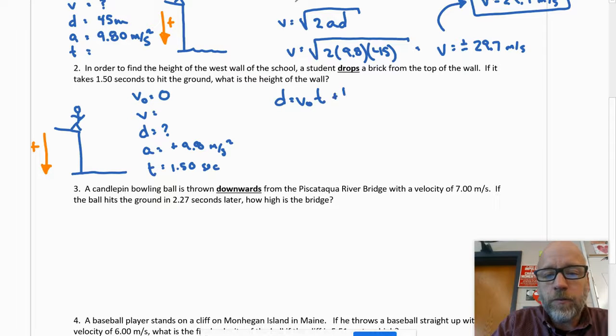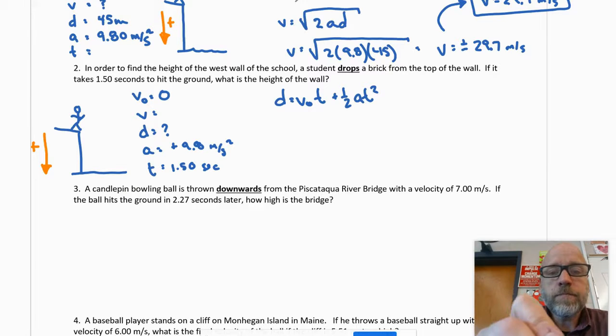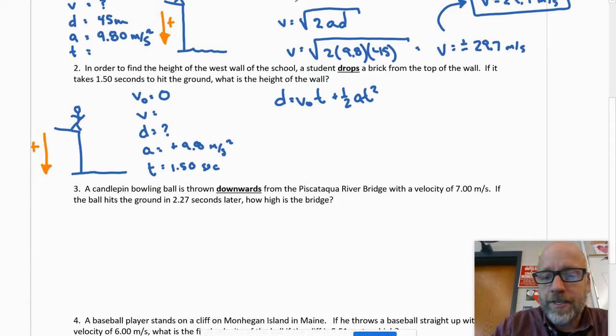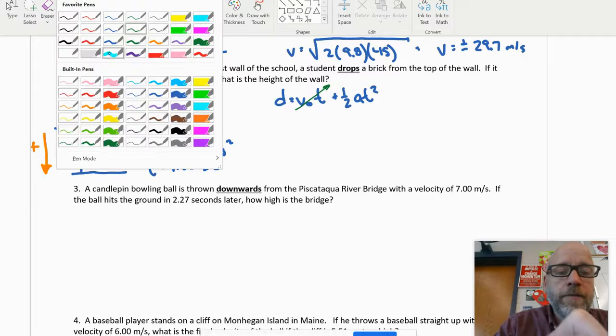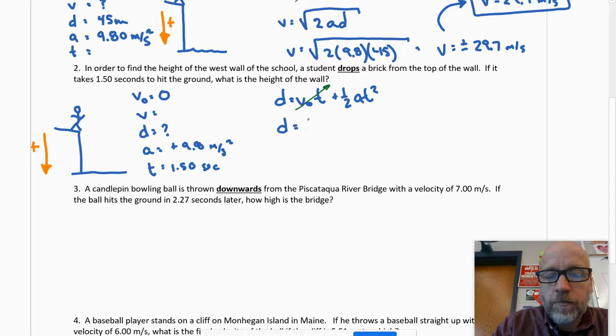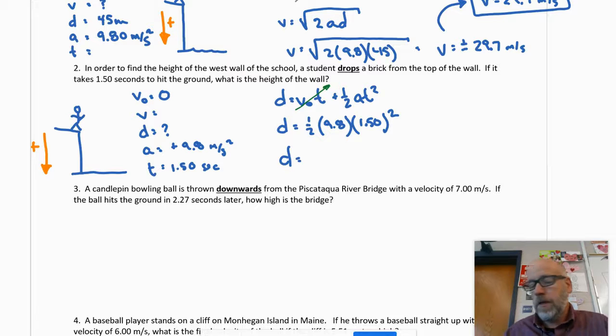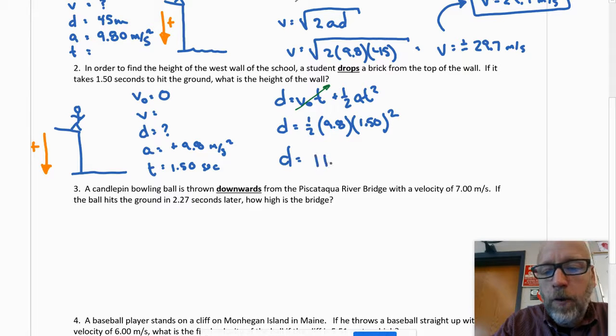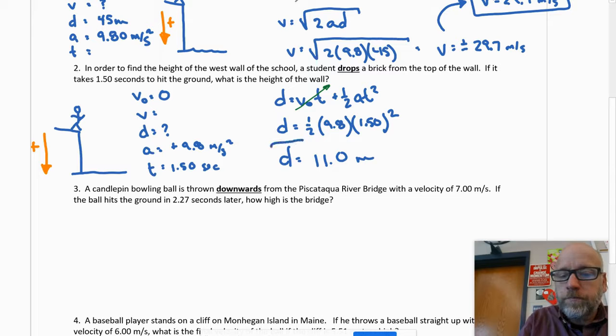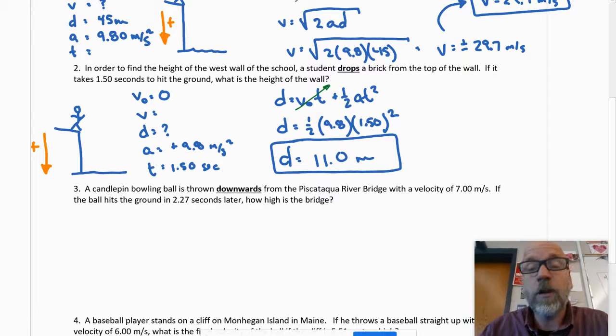If it takes 1.5 seconds to hit the ground, what is the height of the wall? All right, well I'm going to start that with a picture and again I'm going to make down positive. So when I do that, let's go ahead and pull out the information. What formula would I use in order to solve for d? Well we're still learning this stuff, but the one without velocity would allow me to solve for that. So d equals v naught t plus one half at squared. The initial velocity is zero, so that's pretty easily zero times anything is zero, so that whole term is going to go away. Then it's already solved for d, so I'm just going to plug in my one half times 9.8 times 1.5 squared. And if down is positive, boom, I got 11.0 meters.